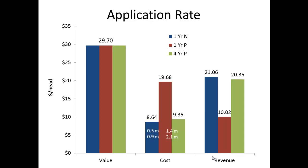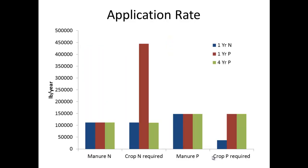Total revenue (value minus cost) is about the same whether you apply on a nitrogen basis or a four-year phosphorus basis — right around $20 to $21 per animal. On a one-year phosphorus basis, total revenue drops to closer to $10 per animal. Looking at nutrients: spreading on a nitrogen basis exactly meets crop nitrogen needs. Spreading on a one-year phosphorus basis creates a nitrogen deficiency for the crop, requiring an additional nitrogen source like anhydrous ammonia, which further increases costs. With the four-year phosphorus basis, you can meet both the nitrogen needs and the phosphorus needs of the crop.